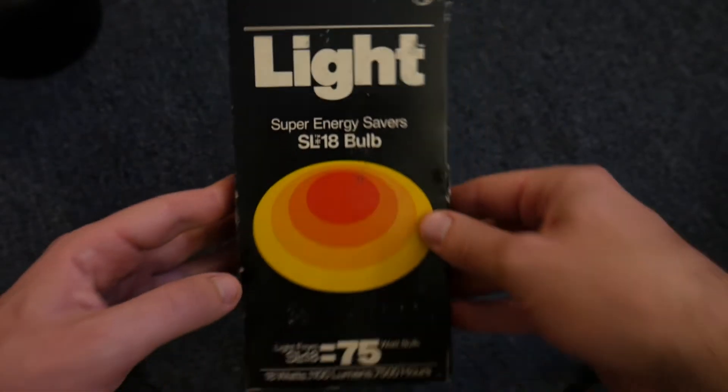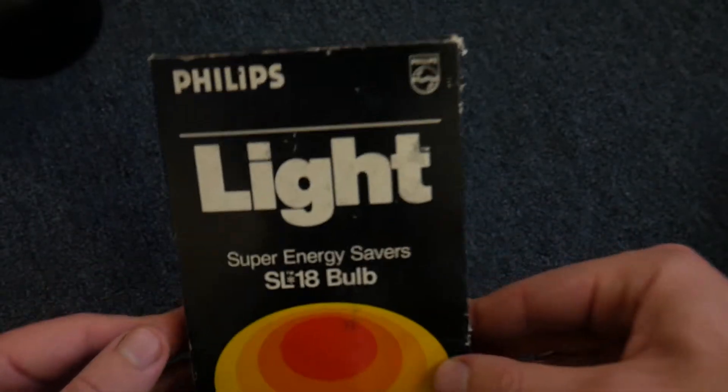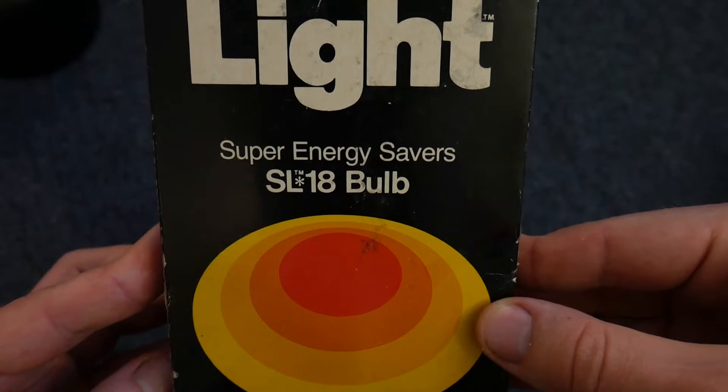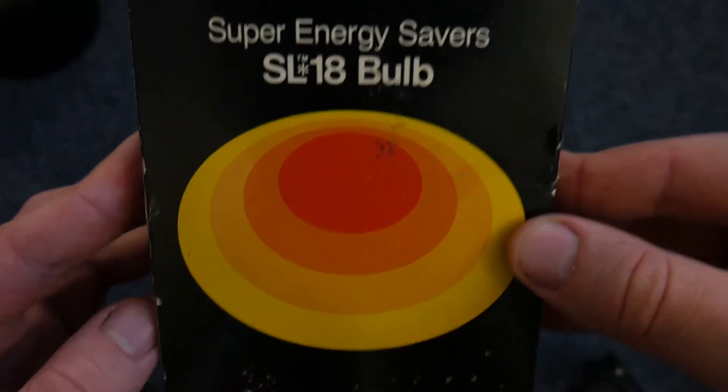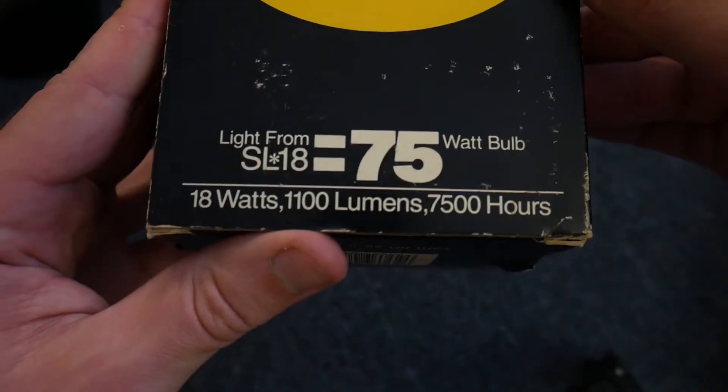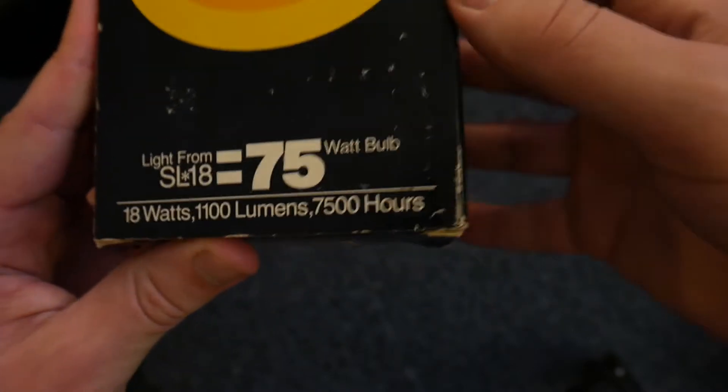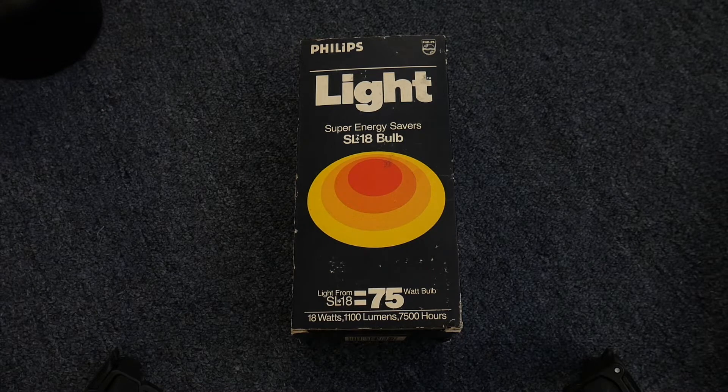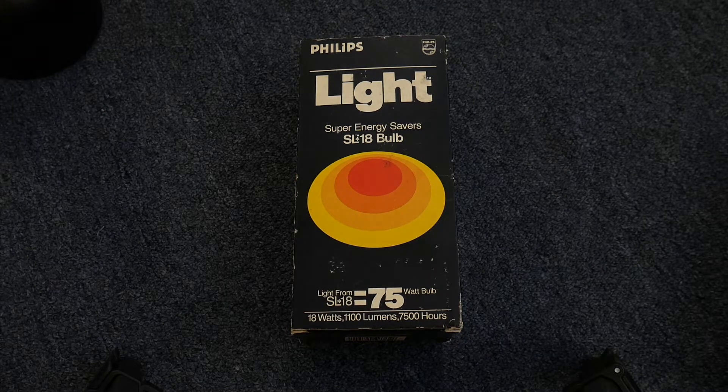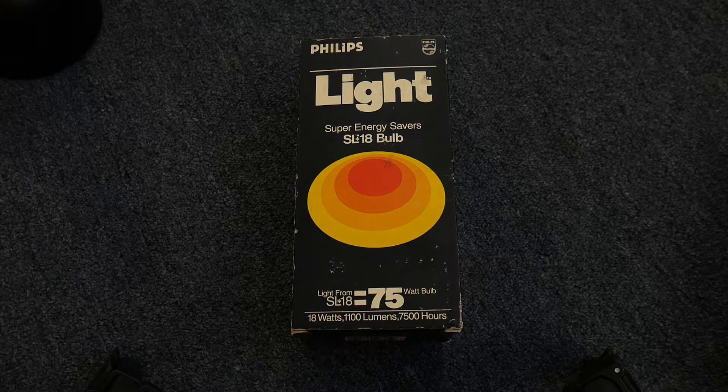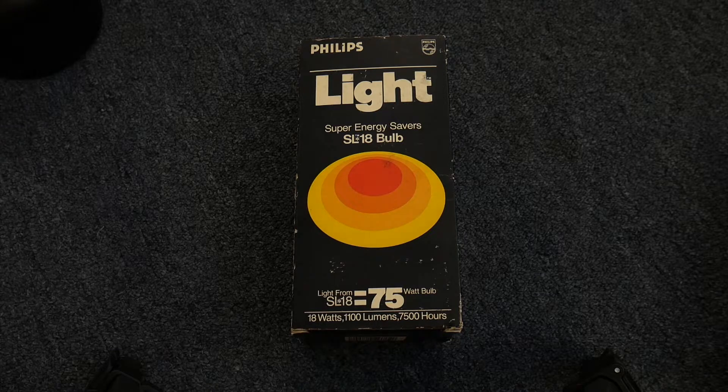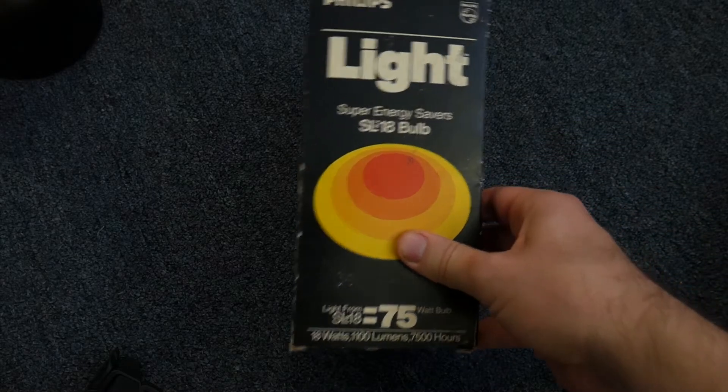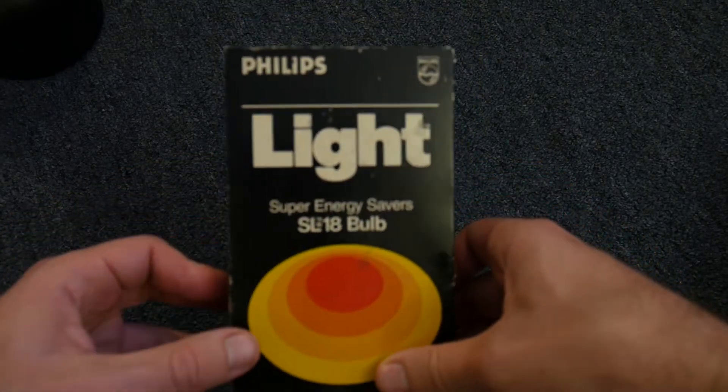This is a Philips Light Super Saver SL18 bulb, and the reason this is so special is because this is the very first electronically ballasted compact fluorescent lamp ever to be produced.